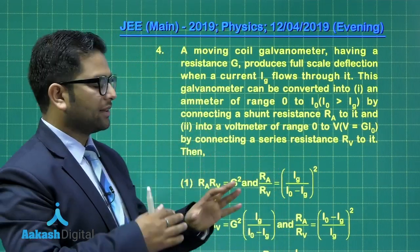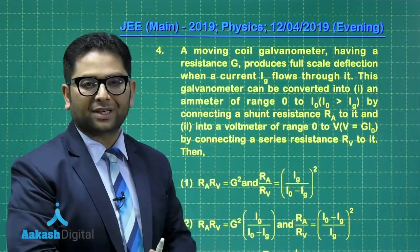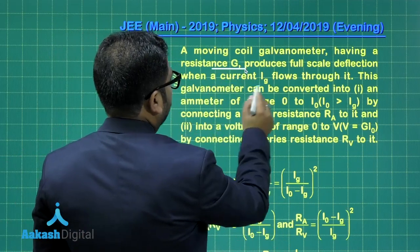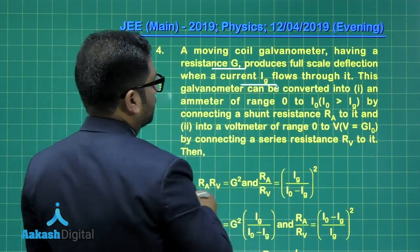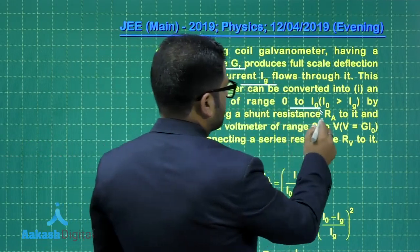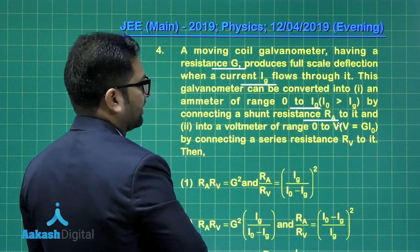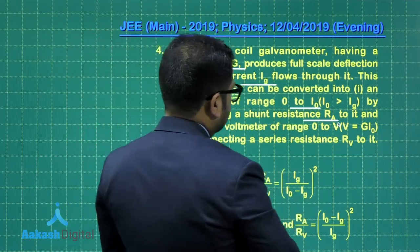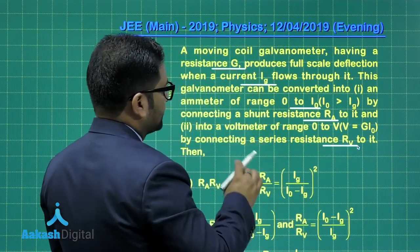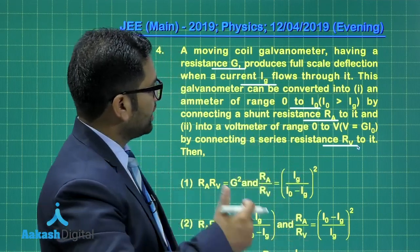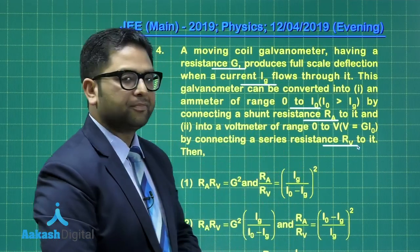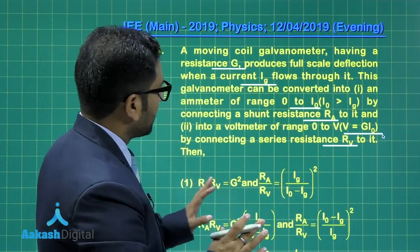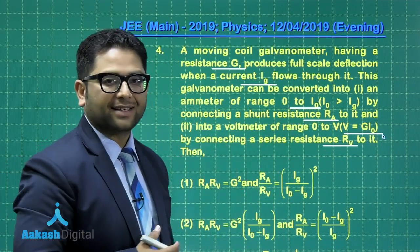This one is not a difficult one, but the numerical data that has been presented, a freshness has been given into the numerical data. Otherwise, it's a simple thing that there is a galvanometer of resistance this much and full scale deflection current is this much. We want to convert into ammeter of range this by shunting with the help of a register of resistance RA. Similarly, in the second case, we want to convert it into a voltmeter by adding a series resistance RV. Now in this given situation, we need to relate RA, RV and G together with the IG and I naught. Now even the voltmeter scale has been given there, G times I naught. So as I said, question-wise, conceptually, it's the same thing. But yes, the repackaging has been very beautifully done.